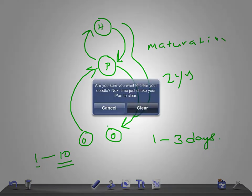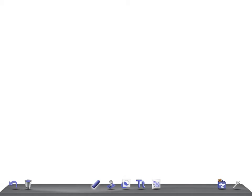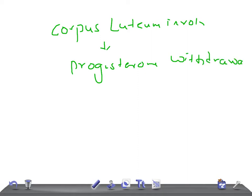Now, what's the pathogenesis? As I said, this is the development of the hypothalamic-pituitary axis maturation. The corpus luteum involutes, and there's progesterone withdrawal.